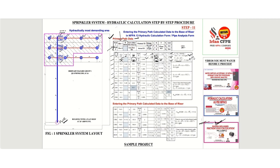For Nodes 2 to 3, the elevation is the same. The K-factor at Node 2 is 5.6, same as Node 1. We get Q = 20.2 GPM using the formula Q = K × √P, where K = 5.6 and P = Pt + Pe + Pf = 11.4 + 0 + 1.6 = 13 psi. Listen carefully to this point — this gives us 20.2 GPM.